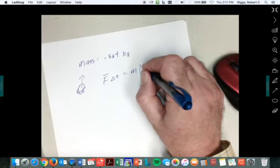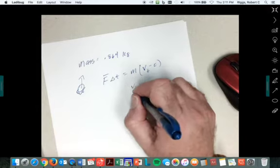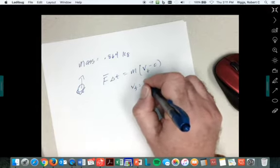Well we already found the change of velocity, V final minus zero, and we found that V final was equal to 7.7 meters per second.